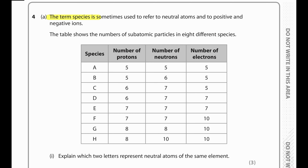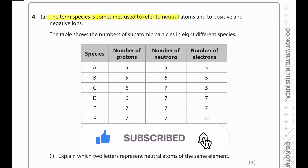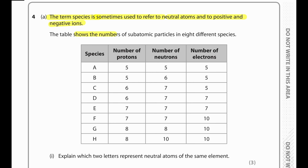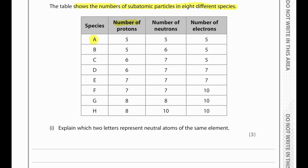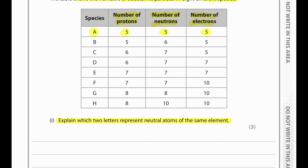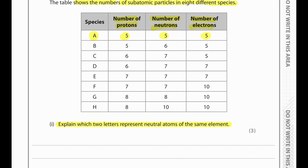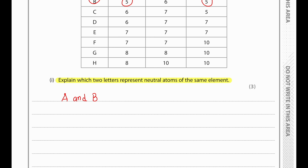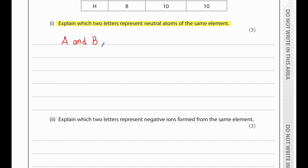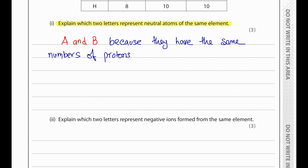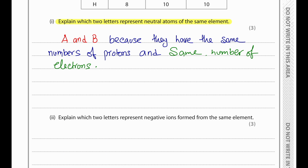The table shows the number of subatomic particles in eight different species. To find neutral atoms of the same element, we need the same number of protons and the same number of electrons. A and B both have 5 protons and 5 electrons, so they represent neutral atoms of the same element. Protons are positive, electrons are negative, making them neutral overall.